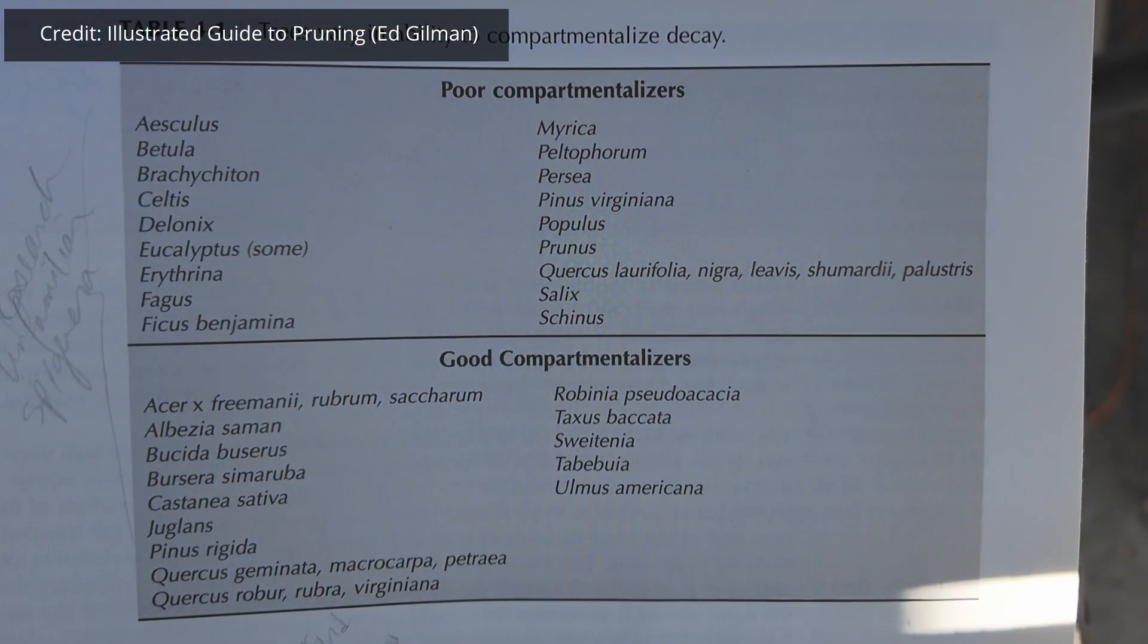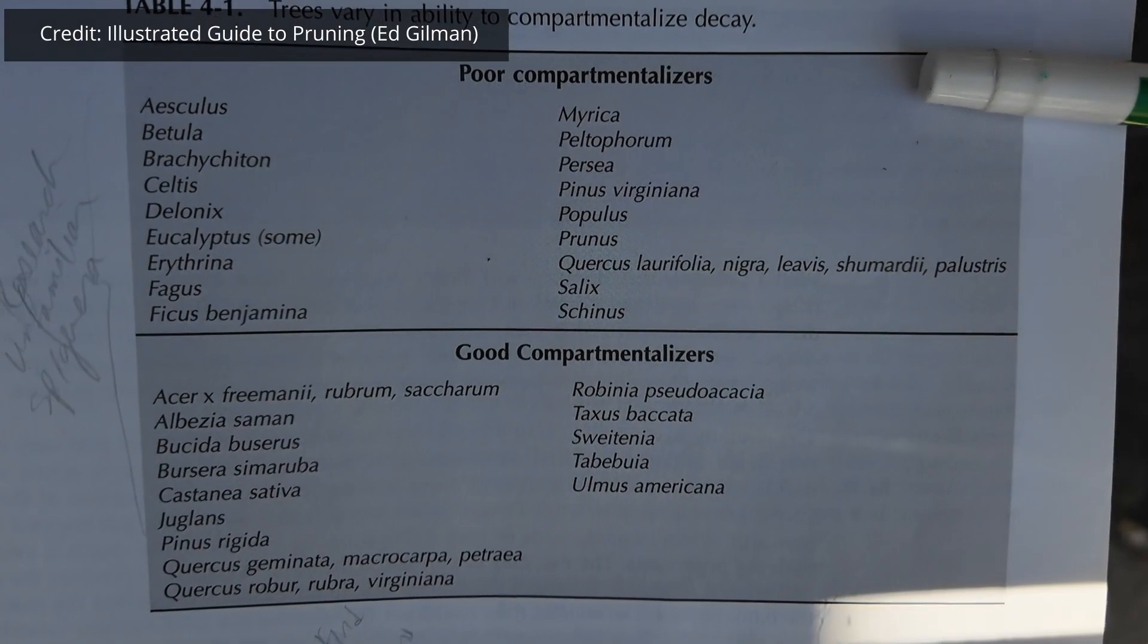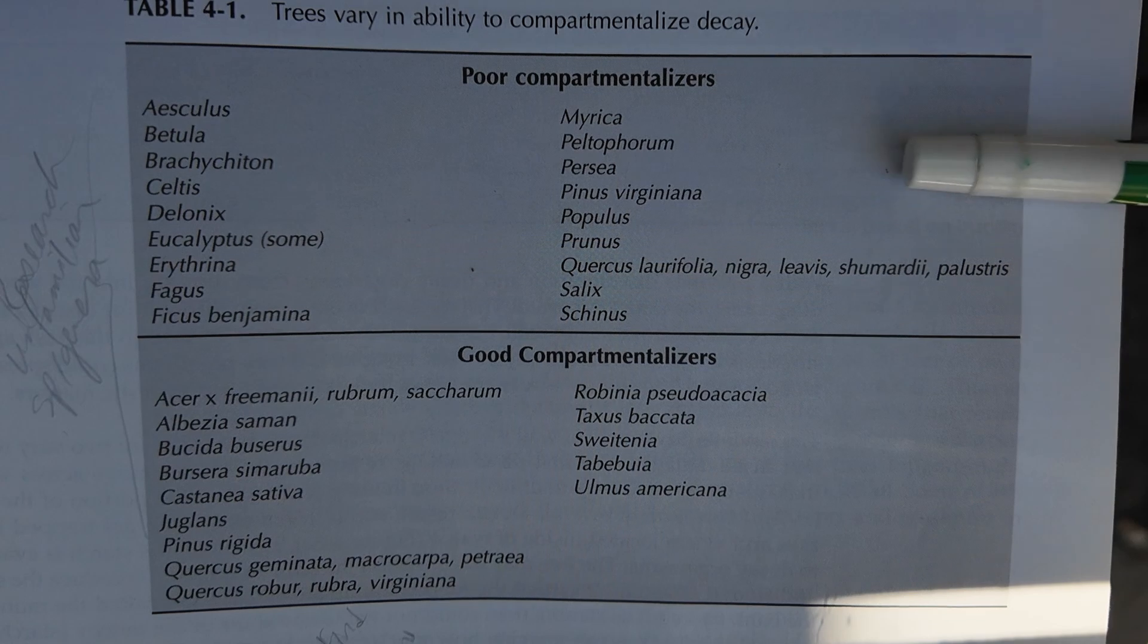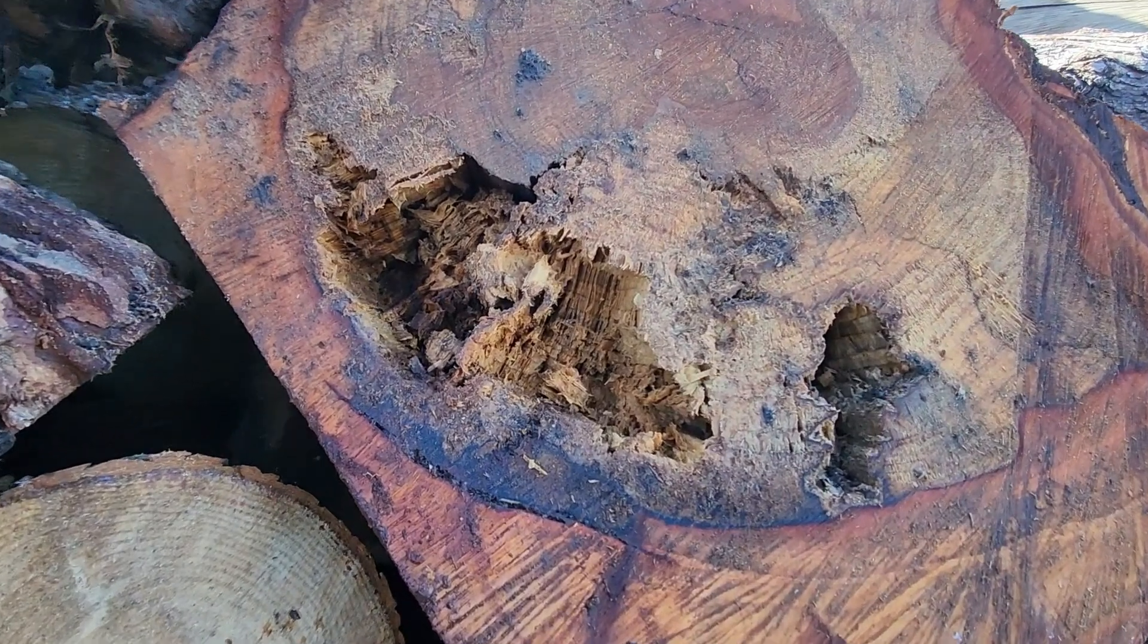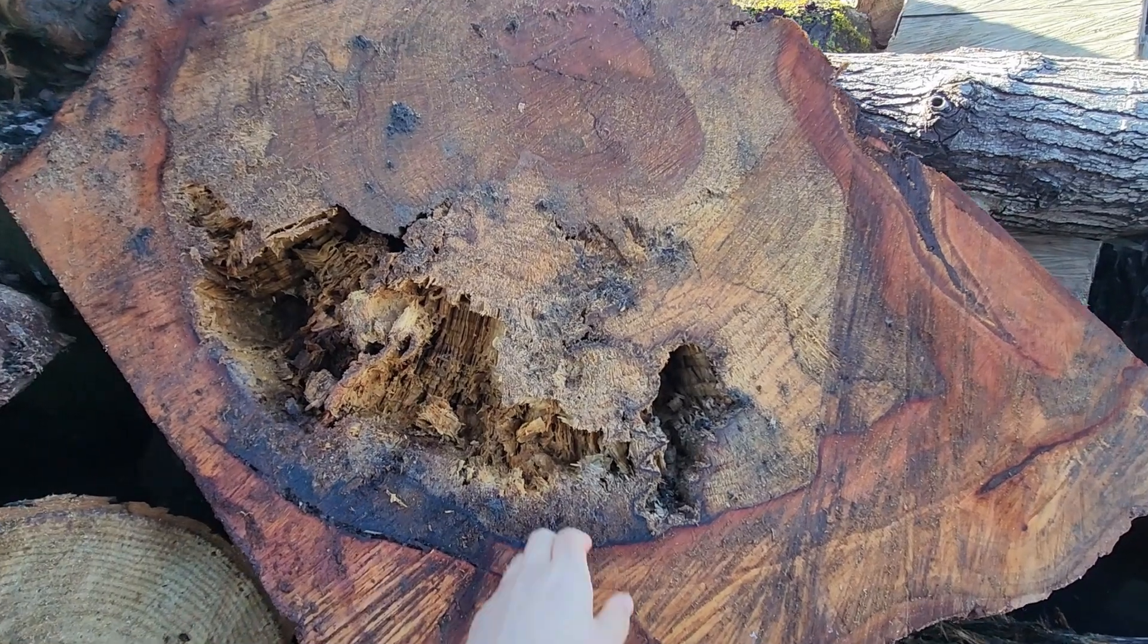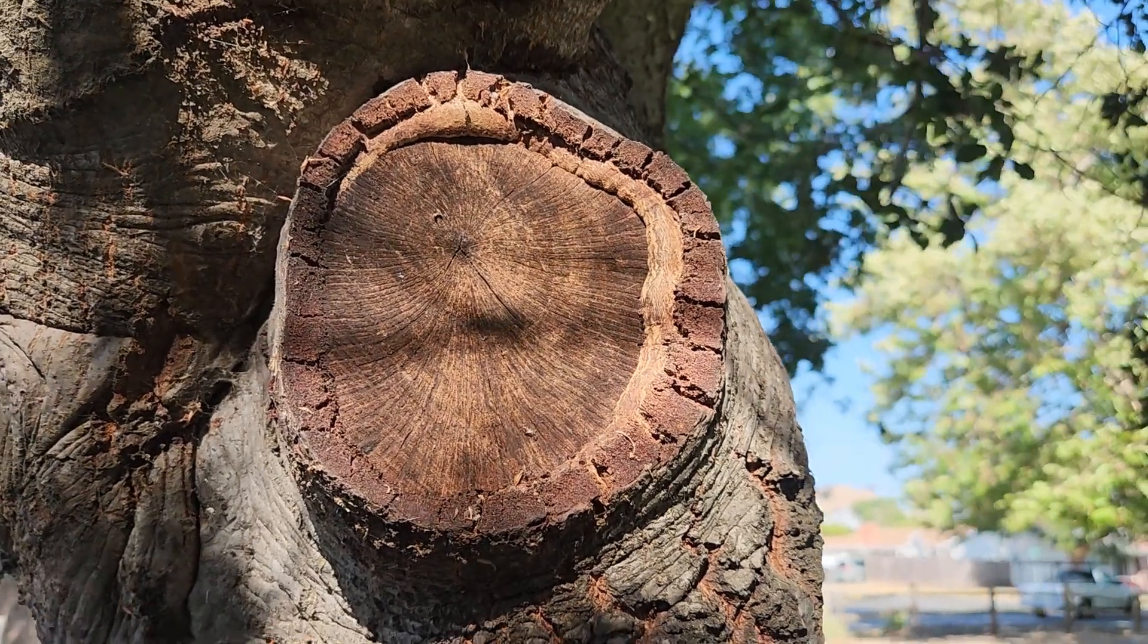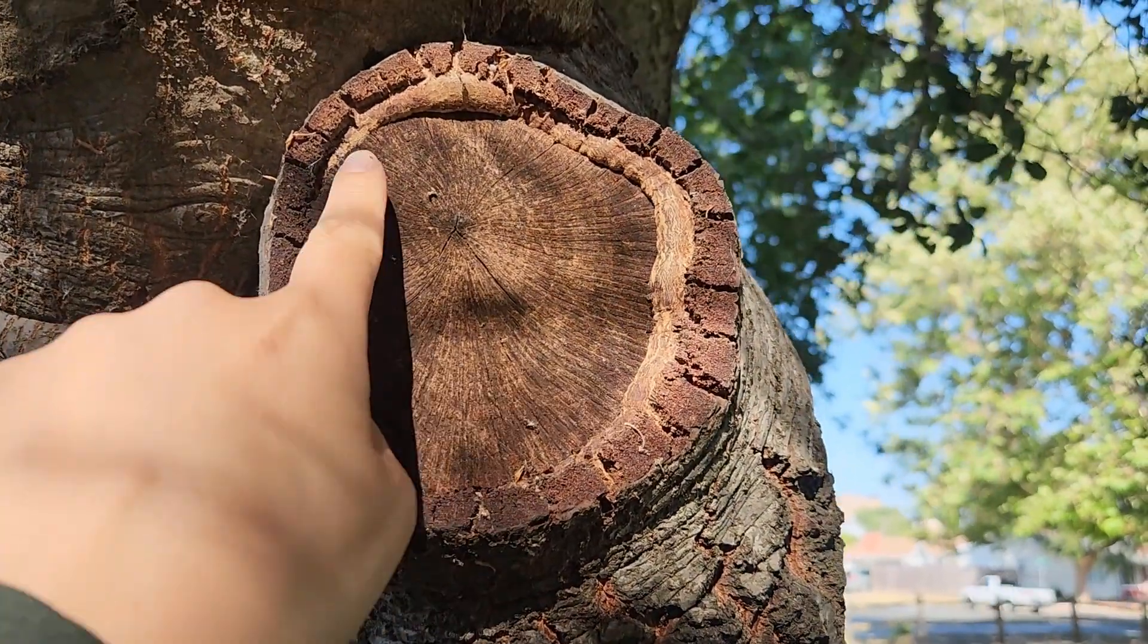Trees are grouped based on how well they can compartmentalize decay. Within a given species, a younger, healthier tree is going to have less of an issue than an older, declining tree. In general, knowing where the species fall is going to be helpful in tree care, because you don't want to be making huge cuts on a poor compartmentalizer because it's more likely to lead to significant decay or death compared to something that's a good compartmentalizer.